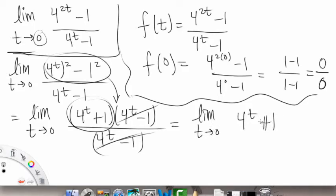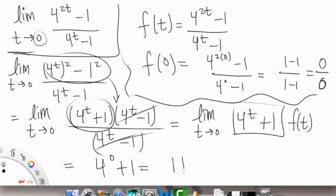And like I said, now that this is continuous at 0, again this is our same f of t, we just rewrote it in a different way. Now we can plug in 0 directly. So we get 4 to the 0 power plus 1, and this is going to equal 1 plus another 1, and that equals 2. Alright, so 2 is our answer.